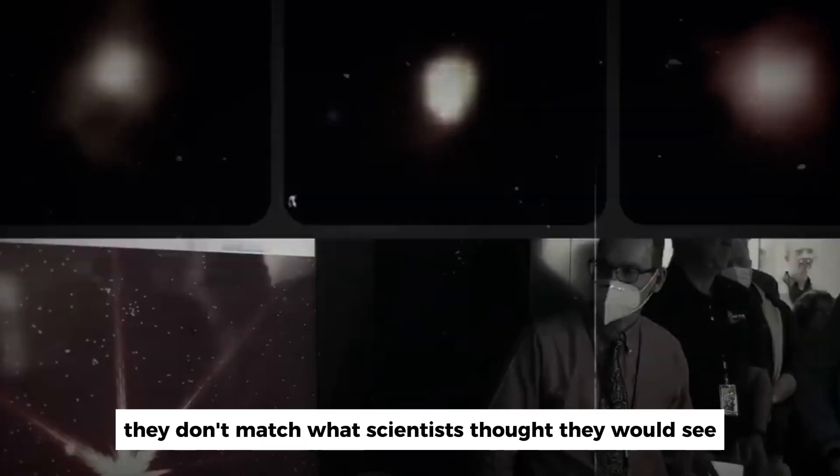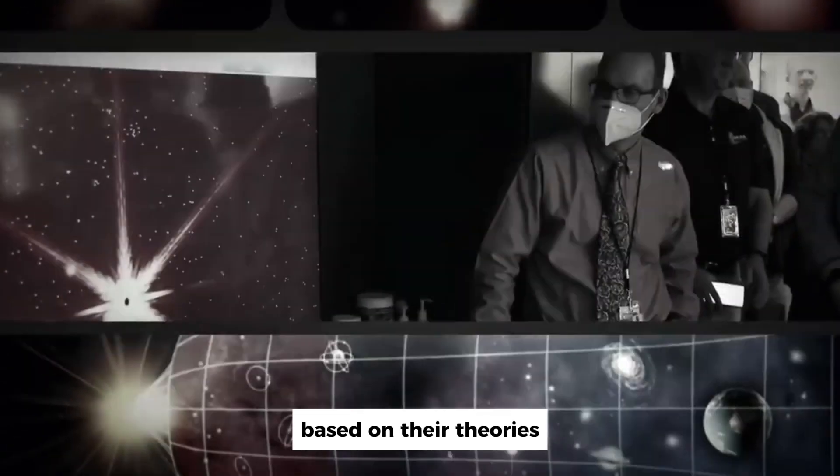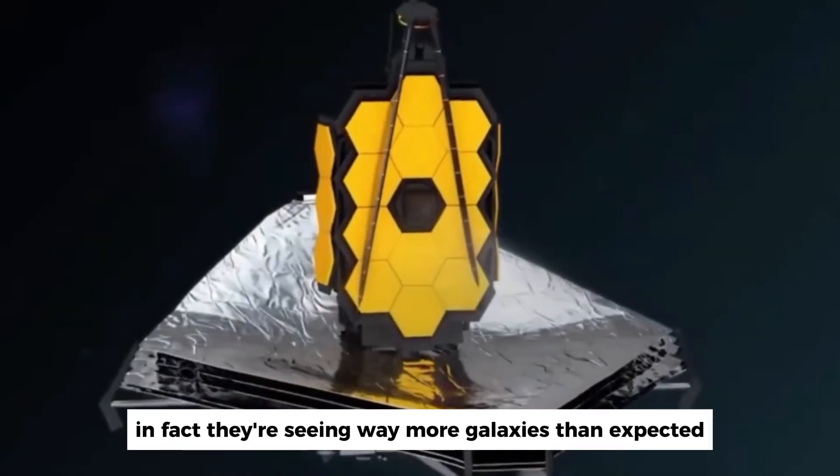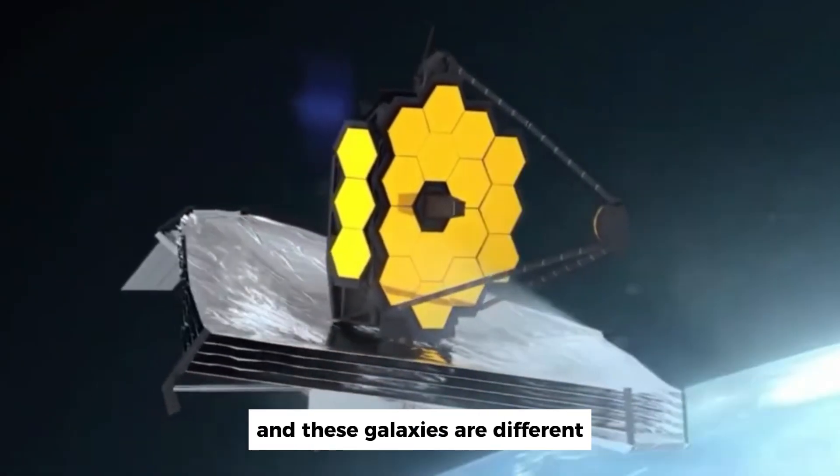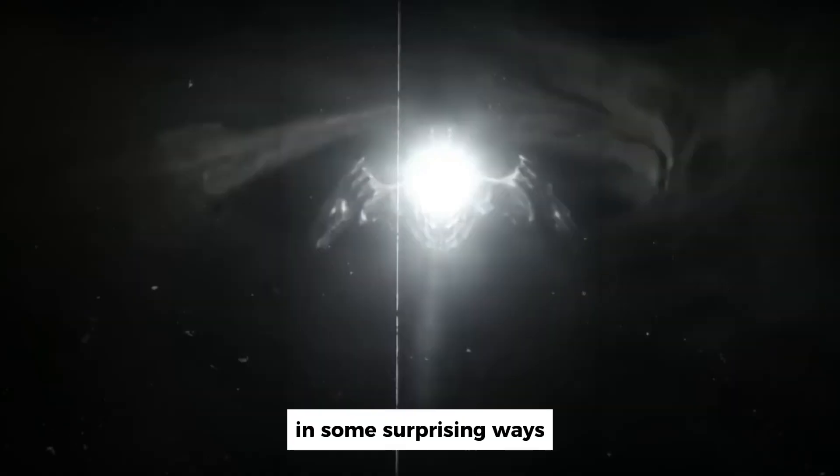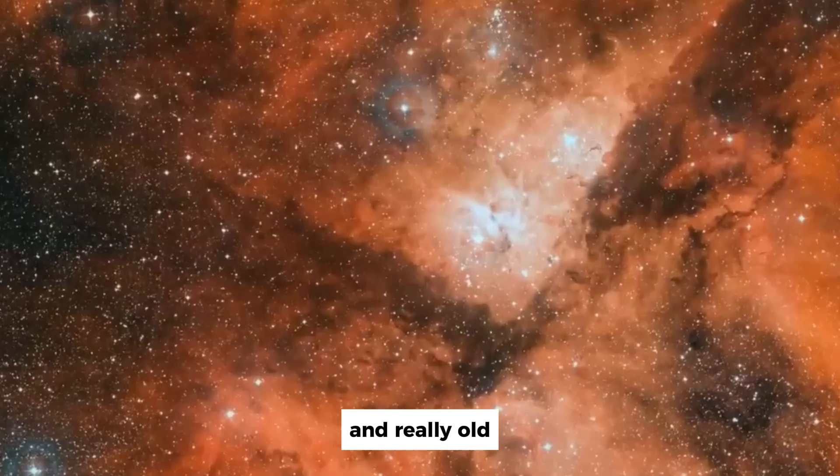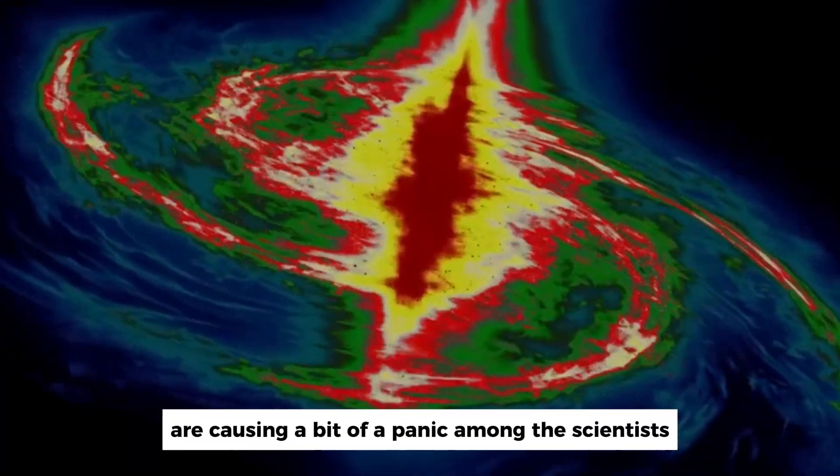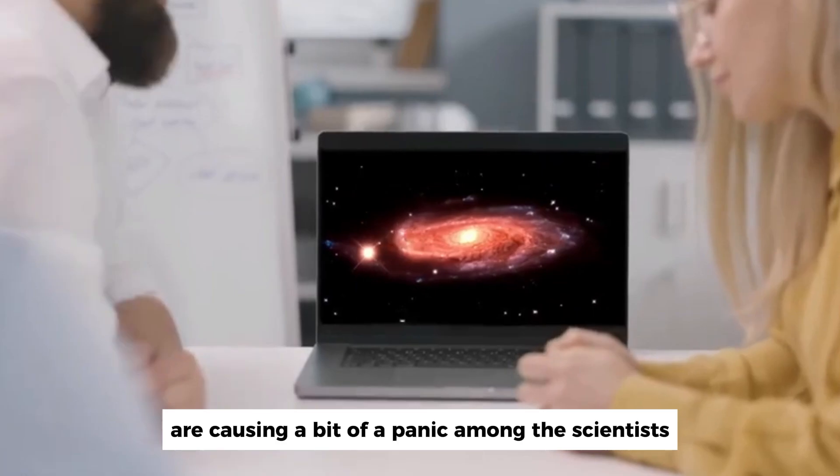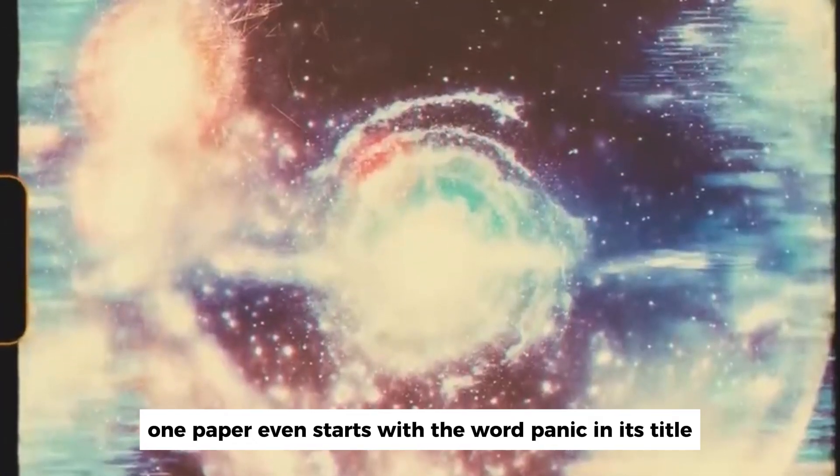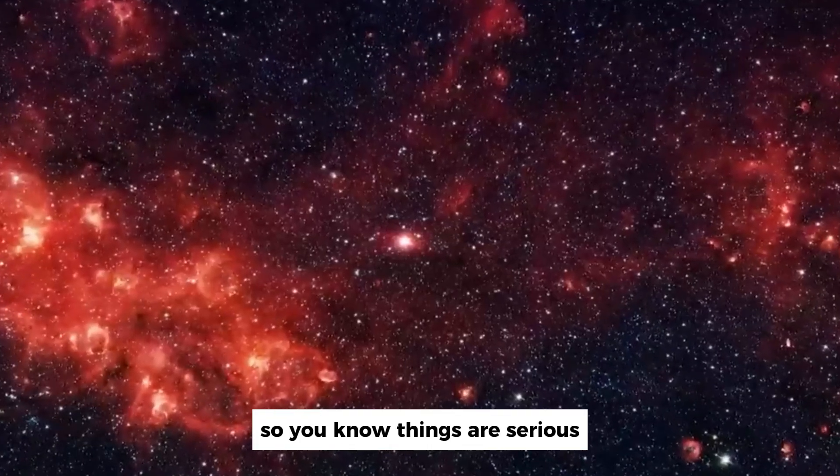They don't match what scientists thought they would see based on their theories. In fact, they're seeing way more galaxies than expected, and these galaxies are different in some surprising ways. They're smooth, smaller than imagined, and really old. All these surprises are causing a bit of a panic among the scientists. One paper even starts with the word panic in its title, so you know things are serious.